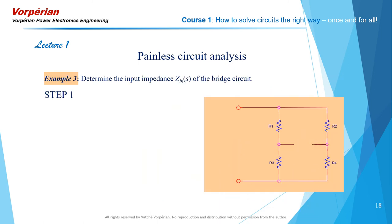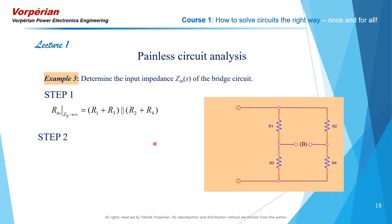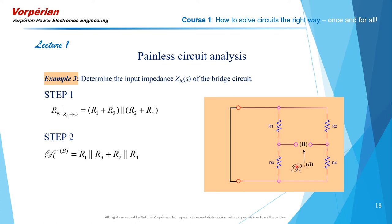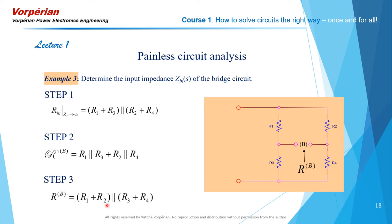Step 1: Take the capacitor out as an open circuit and determine the resistance looking into the input port. We've done that before — it is R1 plus R3 in parallel with R2 plus R4. Step 2, which we've also done before: look back into the network from port B with the input shorted and determine script R super B — that is R1 parallel R3 plus R2 parallel R4. Step 3, also done before: look back into the network from port B with the input port open — that resistance is R1 plus R2 in parallel with R3 plus R4.